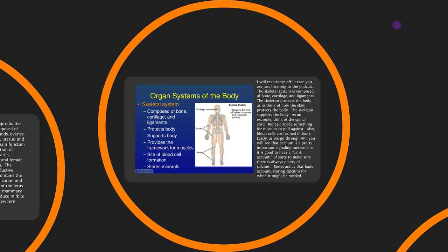I'll read off the organ systems in case you're listening to the podcast. The skeletal system is composed of bone, cartilage, and ligaments. It protects and supports the body, provides something for muscles to pull against, and is where blood cells are formed. Bone also stores calcium — calcium is a very important signaling molecule, which I often describe as the 'on switch': it's how one neuron talks to another, how muscles contract, and even how fertilized eggs begin dividing. The female reproductive system includes the mammary glands, ovaries, uterine tubes, uterus, and vagina; its main function is production of offspring.